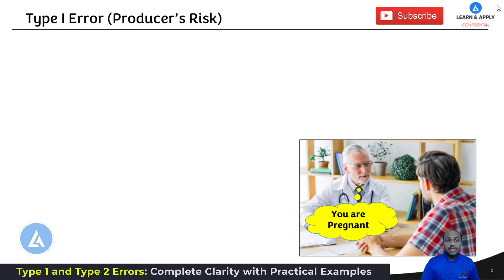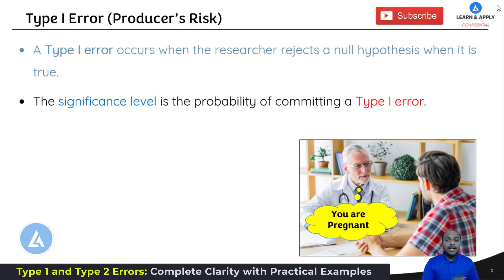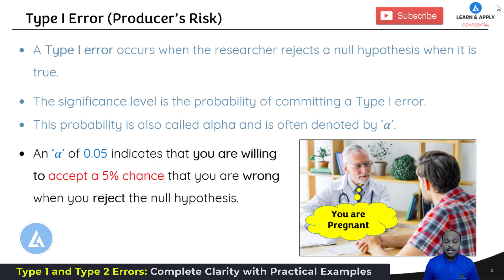Now let's start with type 1 error. Type 1 error is also called producer risk. For easy understanding, if you look at this diagram — here is a male patient and the doctor is saying the male patient is pregnant — that is the error. A type 1 error occurs when the researcher rejects the null hypothesis when it is true. The significance level is the probability of committing a type 1 error. This probability is called alpha, and the common value used is 0.05, indicating you are willing to accept a 5% chance that you are wrong when you reject the null hypothesis.